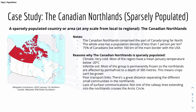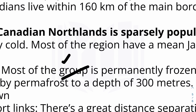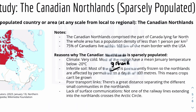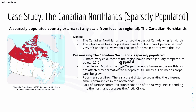Here are the reasons why the Canadian Northlands are very sparsely populated. Climate is a key physical factor — it is extremely cold, with most regions having a mean January temperature below minus 20 degrees Celsius. Because of this cold, the soil is very infertile and most of the ground is permanently frozen. The Northlands are affected by permafrost to a depth of 300 meters, so crops cannot be grown. There are also poor transport links, with great distances separating the small communities.